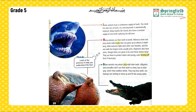Many animals use their teeth to battle. Walruses have two ivory teeth called tusks that can grow up to almost a meter long. Male walruses fight each other over females, and the one with the longest tusks usually wins. Elephants also have tusks, though theirs can grow to be over three meters long. They use them to protect mates and young, even fending off lions if necessary.